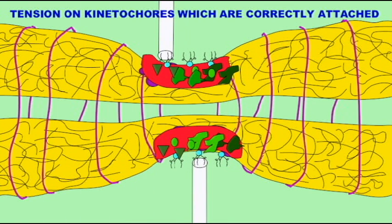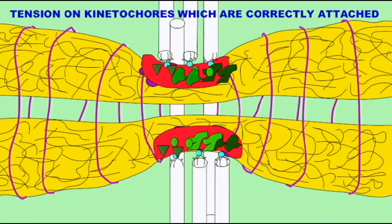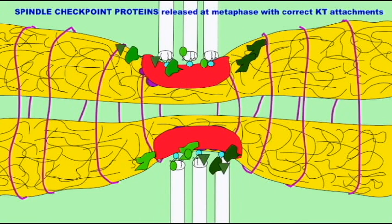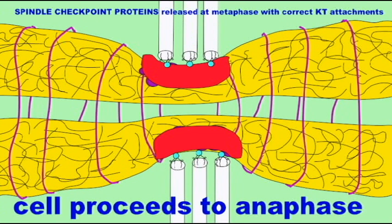In the absence of tension, these spindle checkpoint proteins are not released. So these spindle checkpoint proteins being released when the appropriate amount of tension has been produced when the sister chromatids are properly aligned at the metaphase plate.